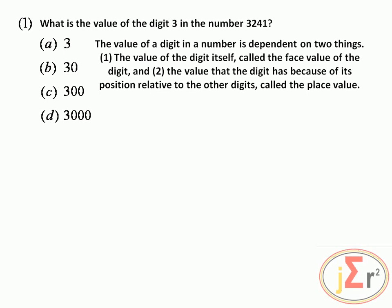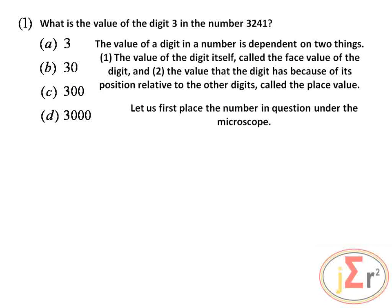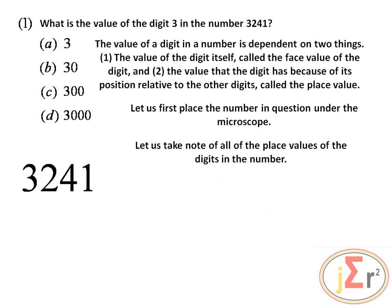The value of a digit in a number is dependent on two things: the face value and the place value. Let us place the number 3241 under the microscope and take note of all the place values of the digits — thousands, hundreds, tens, and ones.